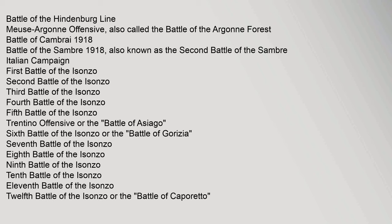Italian Campaign: 1st through 12th Battles of the Isonzo; Trentino Offensive or the Battle of Asiago; 6th Battle of the Isonzo or the Battle of Gorizia; 7th through 11th Battles of the Isonzo; 12th Battle of the Isonzo or the Battle of Caporetto.